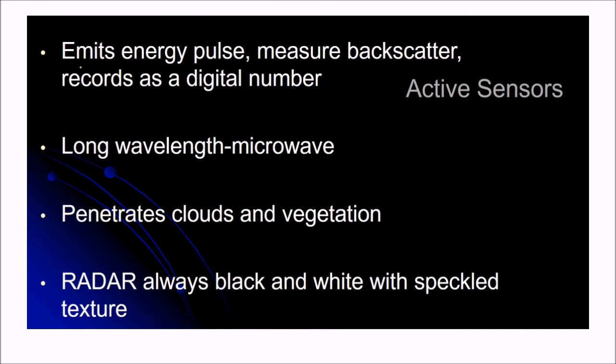Active sensors. We have known about active sensors. They emit energy pulse. It will emit the pulse, measure the backscatter and then record the digital number or intensity values. Long wavelength, we use microwave here. It can penetrate through clouds and vegetation. So radar always black and white. The image is black and white with speckled texture.